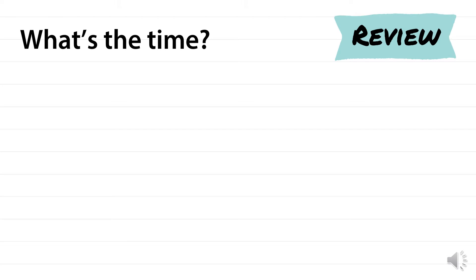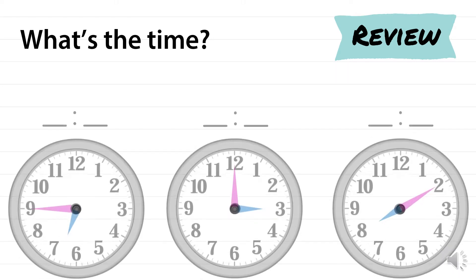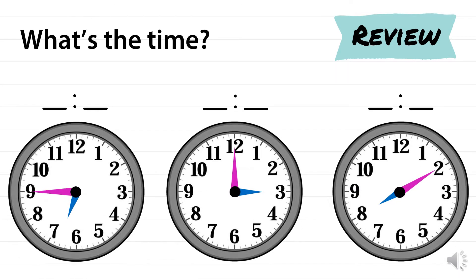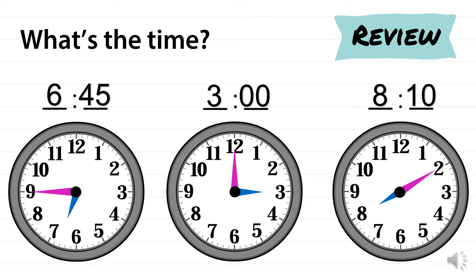Let's review telling time. Write down the times shown on the clocks. Pause this video if you need extra time. So it is 6:45 on the first clock, the second clock reads 3 o'clock, and the third reads 8:10.